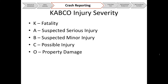When thinking about injury severity, we break it down to what's called the KABCO scale. K stands for fatality, A stands for suspected serious injury, B stands for suspected minor injury, C stands for possible injury, and O stands for no injury, which is property damage only.